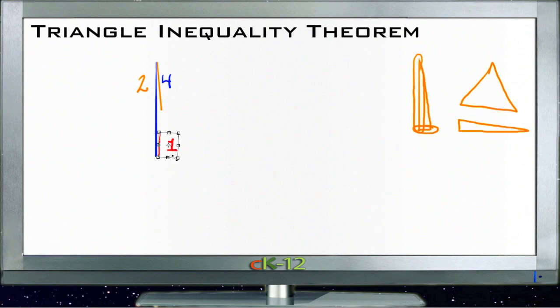So there are limits to the sides of a triangle. If these two sides—if 1 and 2, if 1 plus 2—are not greater than 4, then it can't be a triangle. If 1 and 2 aren't greater than 4, we can't make a triangle out of it.